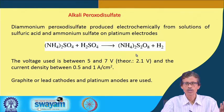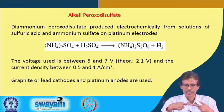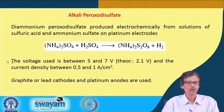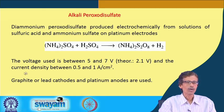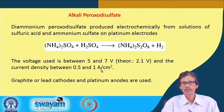On one hand you have the SO3 unit and on the other hand another SO3 unit, with an O-O linkage in between. This gives us the production of ammonium peroxodisulfate or ammonium persulfate. The voltage window for this process is 5 to 7 volts, because theoretically we can use 2.1 volts, but due to overvoltage we must exceed that limit. A current density between 0.5 to 1 ampere per centimeter squared is useful for this production.